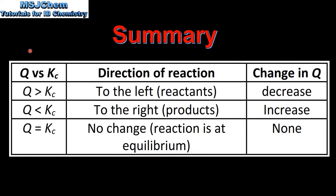In summary: if Q is greater than Kc, the reaction will proceed to the left in favor of the reactants and Q will decrease. If Q is less than Kc, the reaction will proceed to the right in favor of the products and Q will increase. If Q is equal to Kc, there will be no change because the reaction is at equilibrium. Don't forget to check the video description for a link to a practice worksheet.